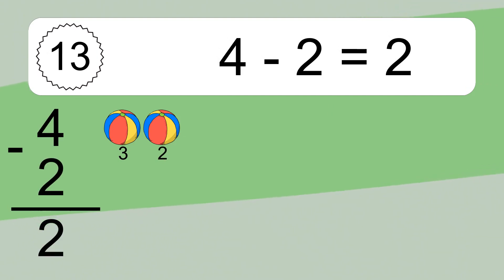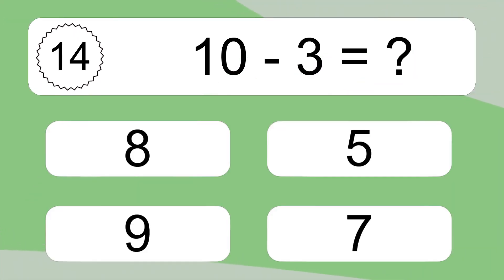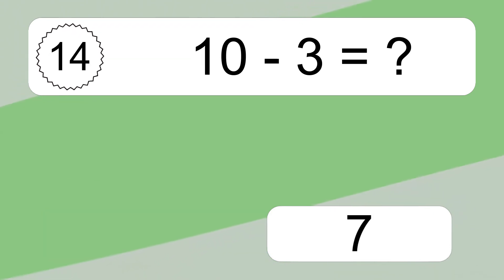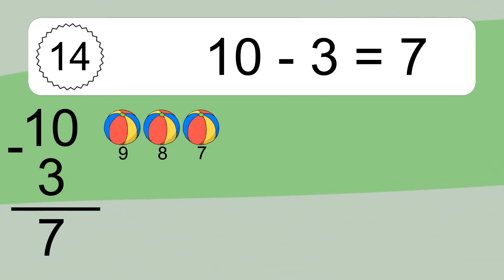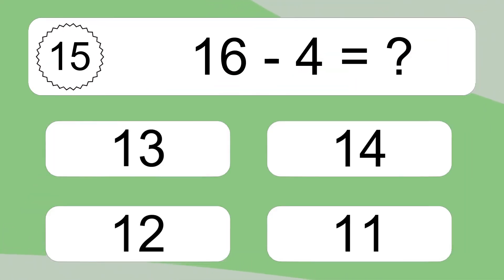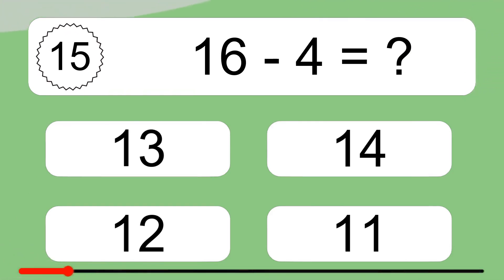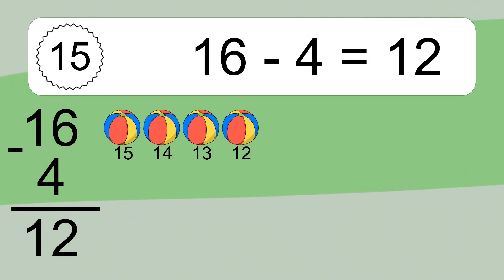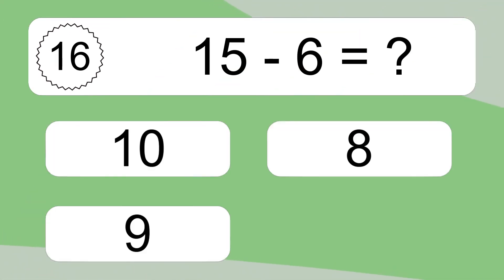Four minus two equals what? Four minus two equals two. Let's count it: three, two. Ten minus three equals what? Ten minus three equals seven. Let's count it: nine, eight, seven. Sixteen minus four equals what? Sixteen minus four equals twelve. Let's count it: fifteen, fourteen, thirteen, twelve. Fifteen minus six equals what?